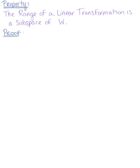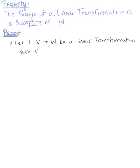We have a property here that we want to prove: the range of a linear transformation is a subspace of vector space W. To begin, we let T from V onto W be a linear transformation, where V and W are vector spaces.